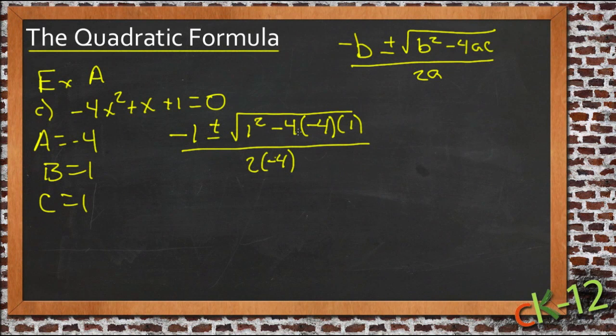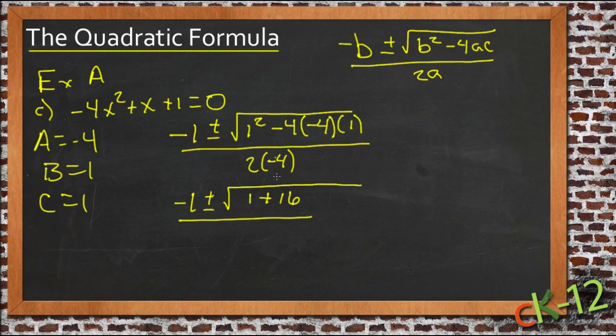So we have negative b plus or minus the square root of b squared minus 4 times a times c all over 2 times a. So now we need to simplify. We have negative 1 plus or minus the square root of 1 squared, that's 1, and then we have negative 4 times negative 4, that's 16, and 16 times 1 is just 16. So we have 1 plus 16 over 2 times negative 4, that's negative 8.